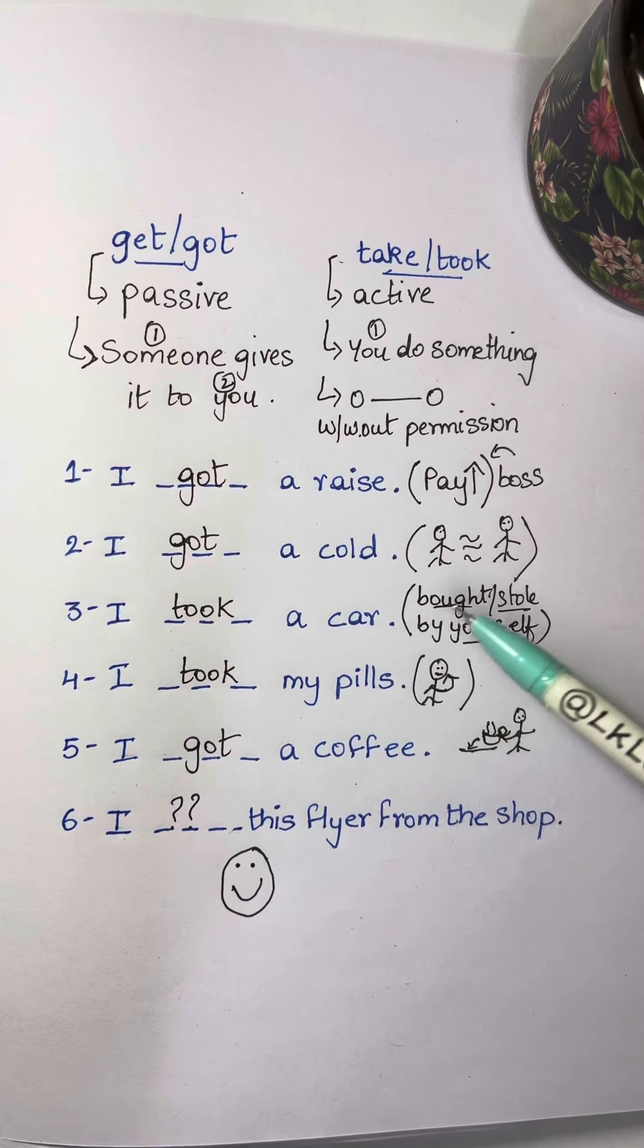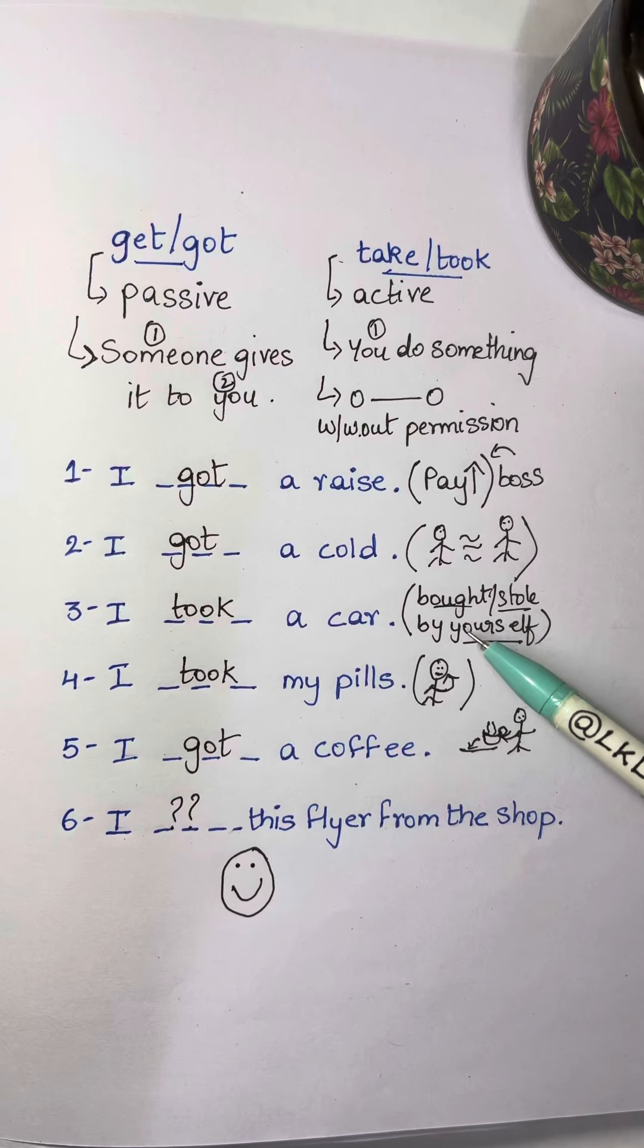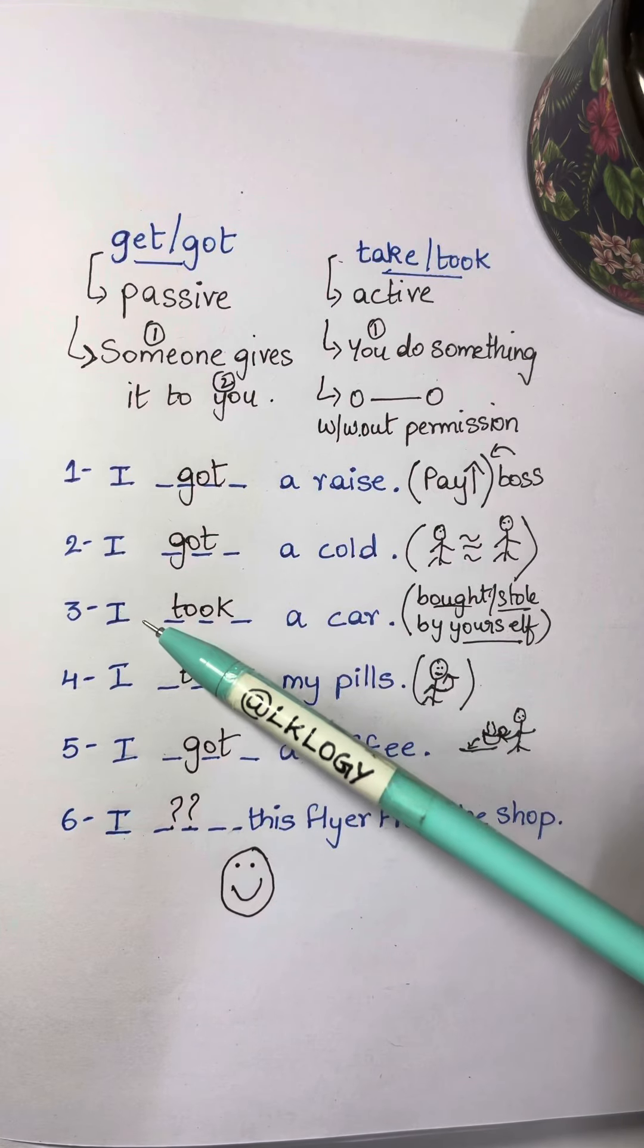I blank a car. So maybe you bought it or you stole it or bought it by yourself. So you took a car.